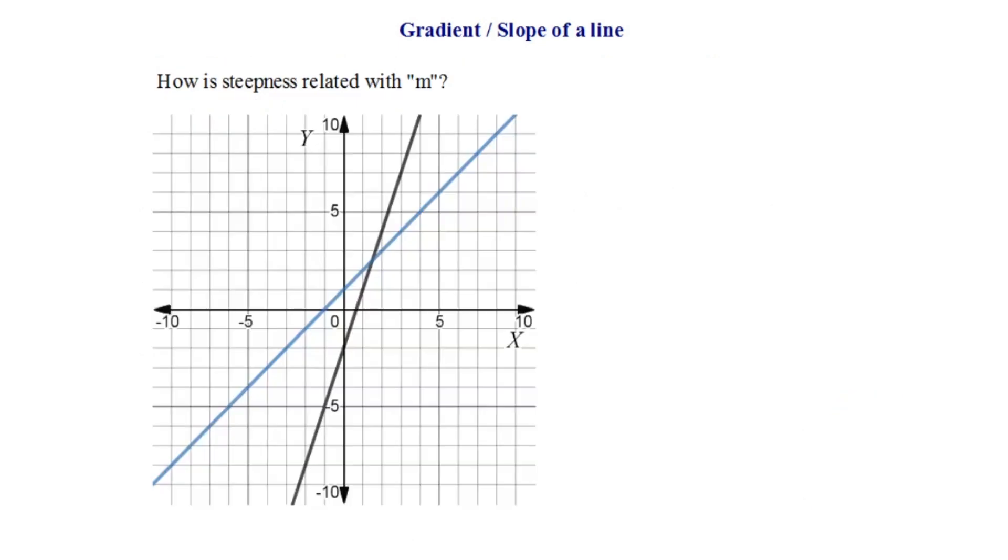So you must be wondering how is this steepness related with gradient? Let's figure out the gradient of these two lines, that is the black line and the blue line. I have already found the gradient of both the lines. For the black line the gradient is 3, and for the blue line the gradient is 1. You may verify the same using what you have studied just now.